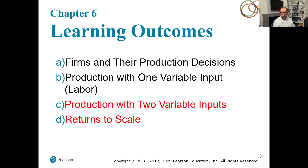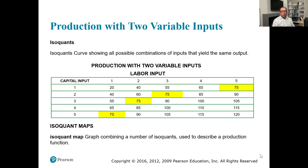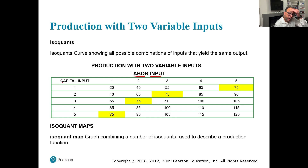In part 2, we're going to discuss production again with two variables. The topic is production with two variable inputs and returns to scale. When we are using two inputs, both are variable. In our previous example, we were using two variables but one is fixed and the other is variable. Here both inputs are variable — capital and labor.